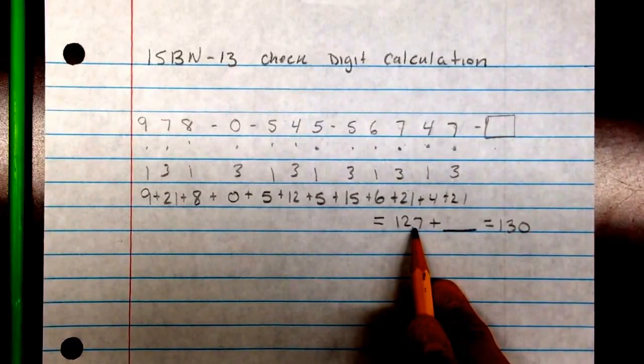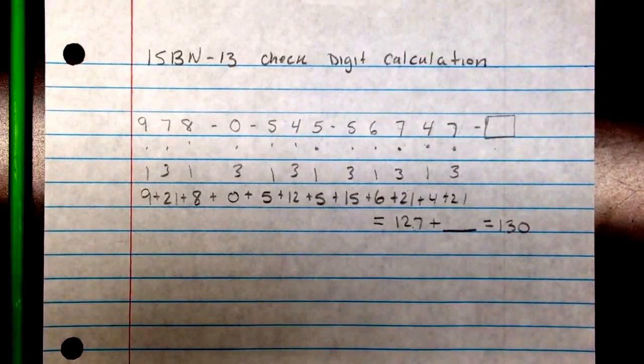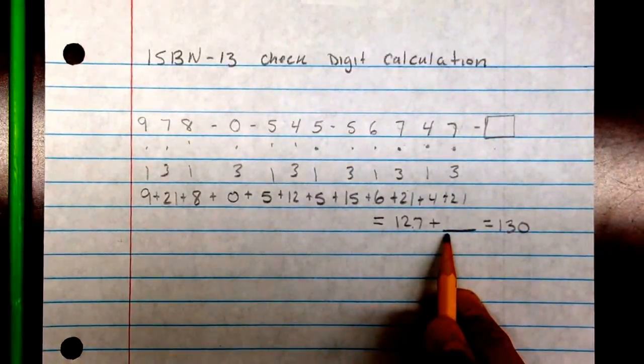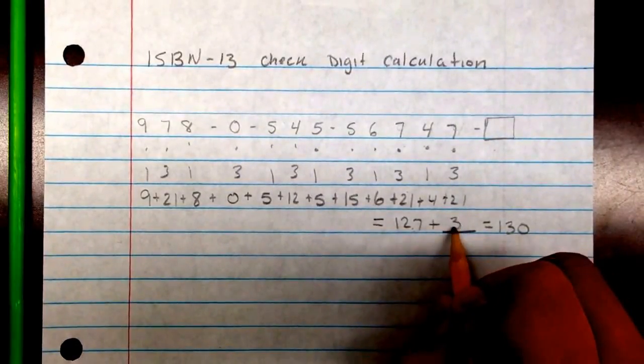130 is the next highest multiple — you'd go 120, 130, 140, 150, and so on. You need a number less than 10, though. So in this case, you can see the number would be 3.